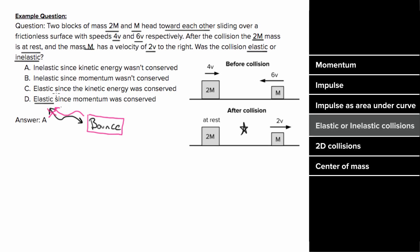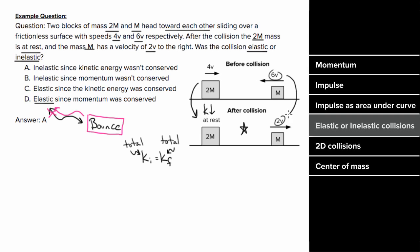If you really want to know whether a collision was elastic, you have to determine whether the total kinetic energy was conserved or not. And we can figure that out for this collision without even calculating anything. Since the speed of the 2m mass decreased, the kinetic energy of the 2m mass went down. And since the speed of the m mass also decreased after the collision, the kinetic energy of the mass m went down as well.